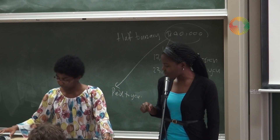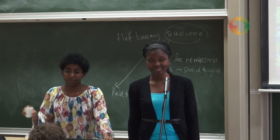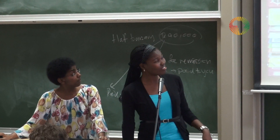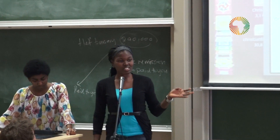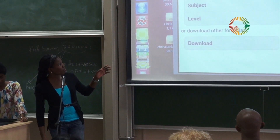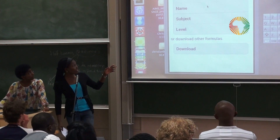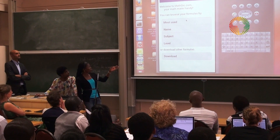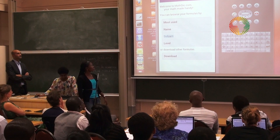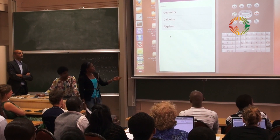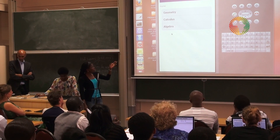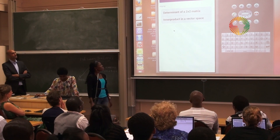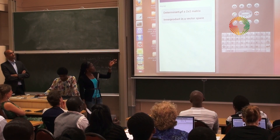How is this going to work? As you can see, this is our homepage. You can search the formulas that you want either by name, by subject, or by level. For instance, if you want to go to subject, you can click on any of the subjects — for instance, algebra — and then you get formulas.